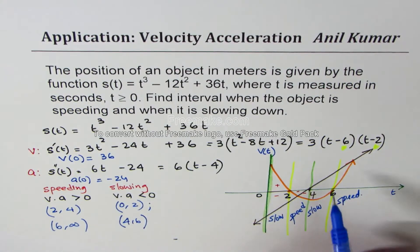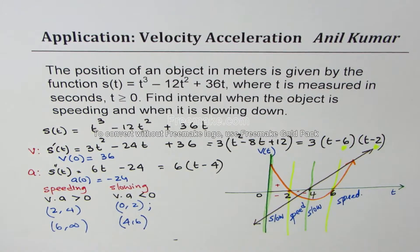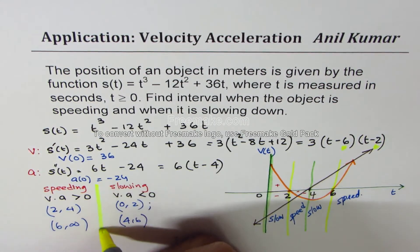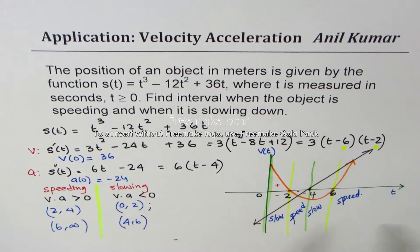So whenever you see same signs of acceleration and velocity, we know they are speeding. If they are having opposite signs, then they are slowing down. So I hope that helps you to easily capture the information from the given graph.